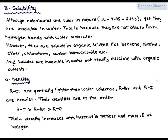Now let us focus on density. Alkyl chlorides are lighter than water whereas bromides and iodides are heavier than water. The density follows the trend: alkyl iodide is greater than alkyl bromide which in turn is greater than alkyl chloride. The densities of alkyl halide increase with increase in number and mass of halogen. Let us switch to the next slide.